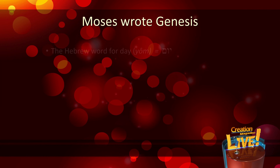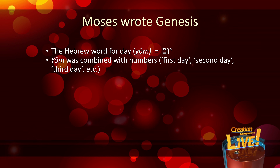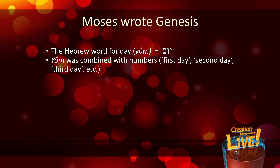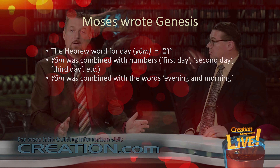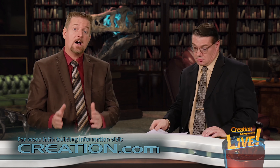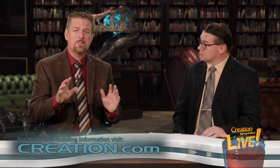When Moses compiled the account of creation in Genesis 1 under the inspiration of God, he used the Hebrew word yom for day. He combined yom with numbers — first day, second day, third day, etc. — and with the words 'evening' and 'morning.' The first time the word 'day' appears in Scripture is in verse 5 of chapter 1, and it appears twice, with a slightly different meaning both times.